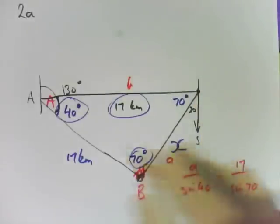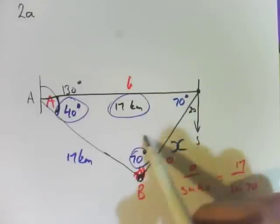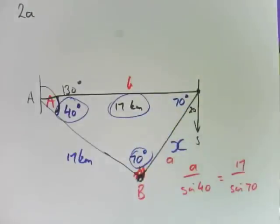So it's all about drawing the triangle, working out what angles you already know or what distances you already know, and then which rule applies to the question.